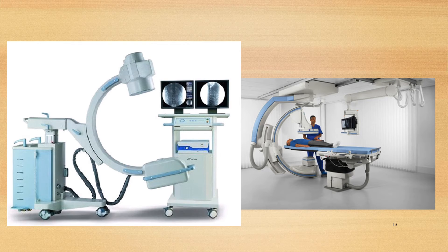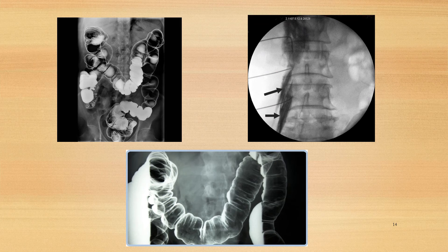Fluoroscopy is a study of moving body structures — it's similar to an x-ray movie. A continuous x-ray beam is passed through the body part being examined and transmitted to a TV-like monitor so that the body part and its motion can be seen in detail. Fluoroscopy is used in many types of examinations and procedures such as barium x-rays for the intestines, cardiac catheterization, arthrography — which is visualization of joints — and lumbar puncture.